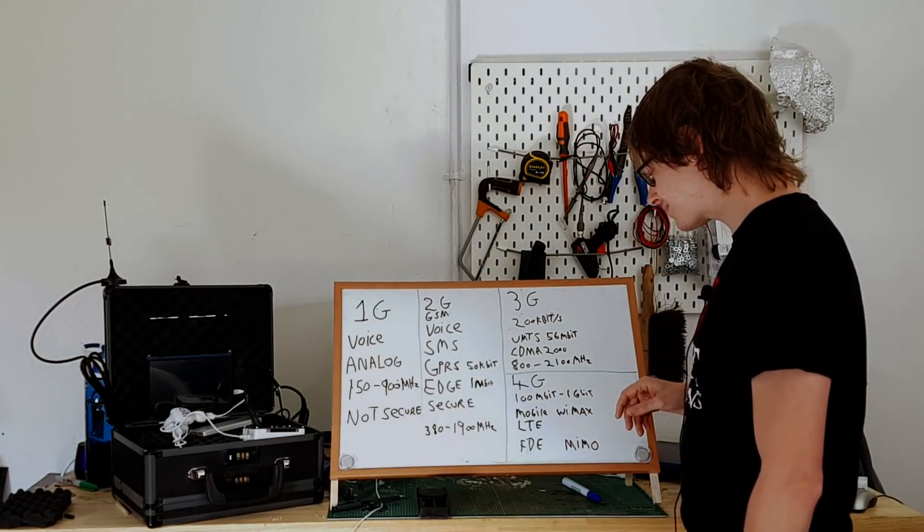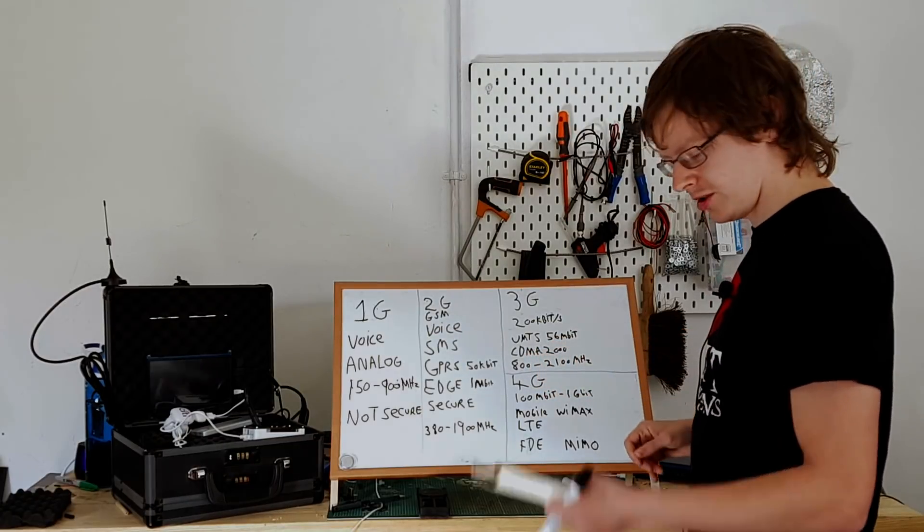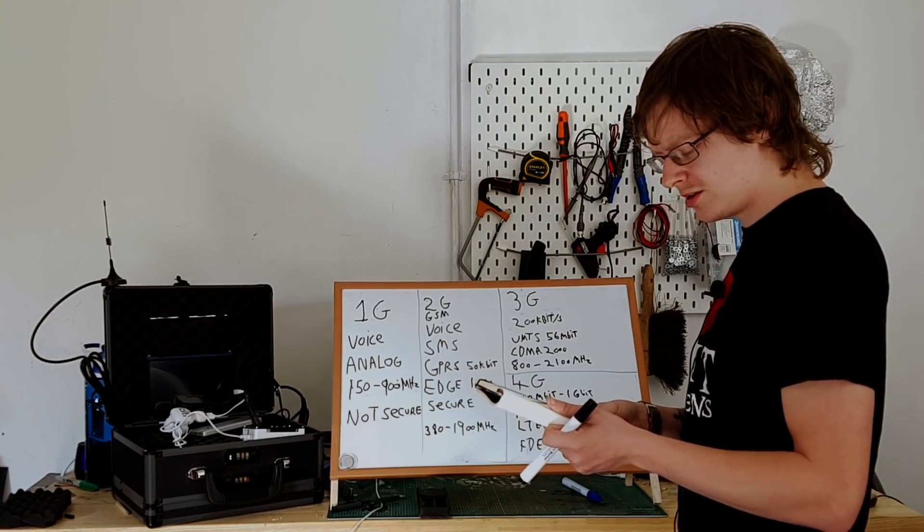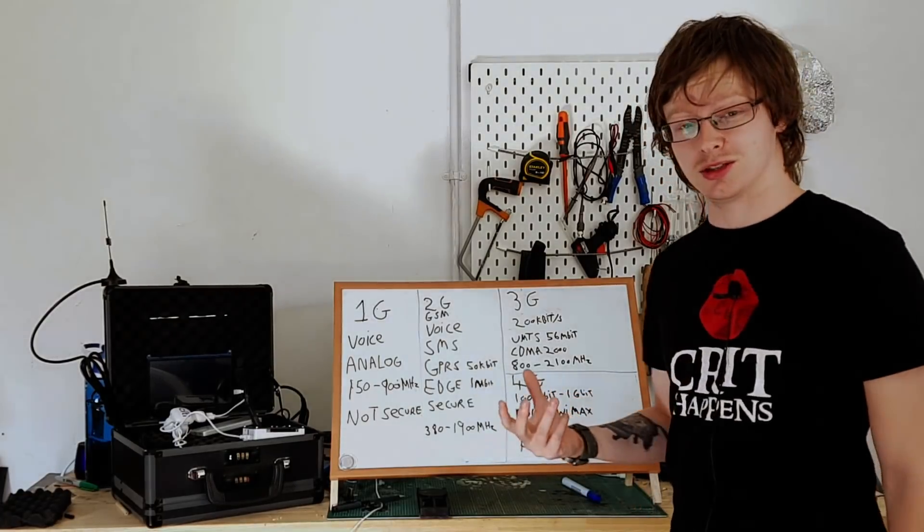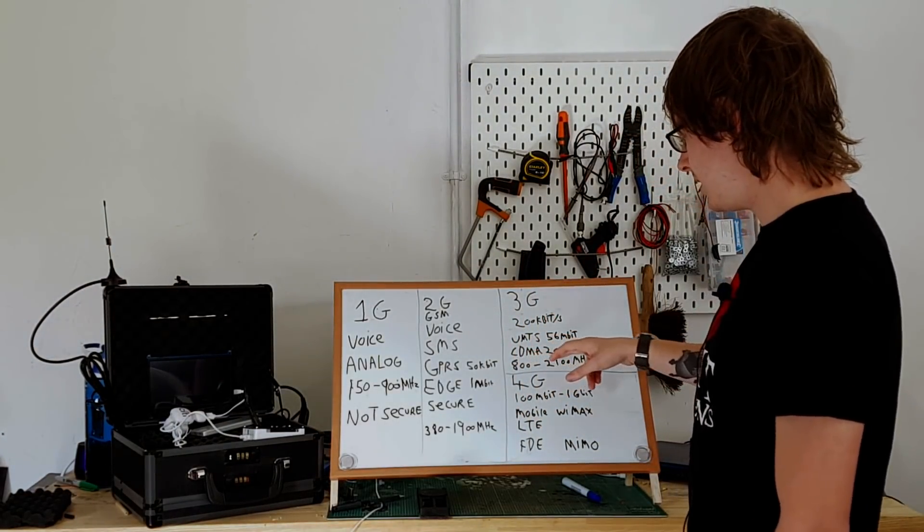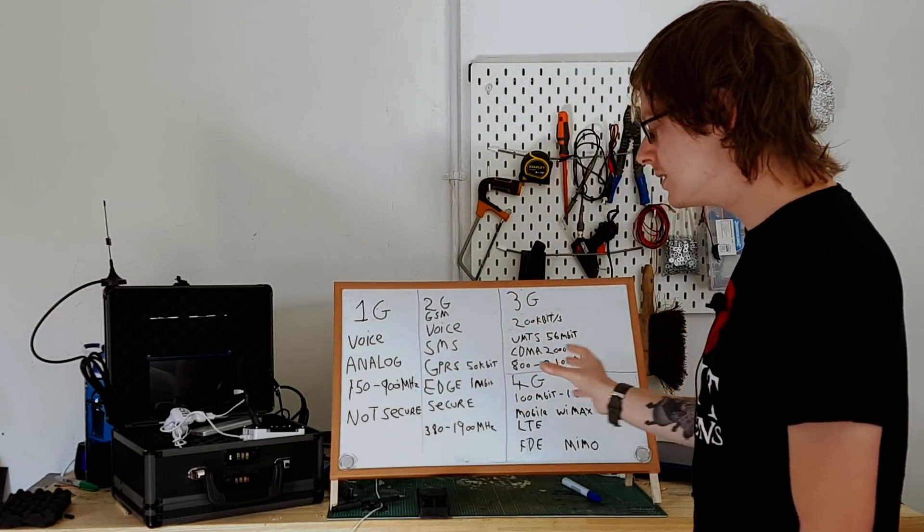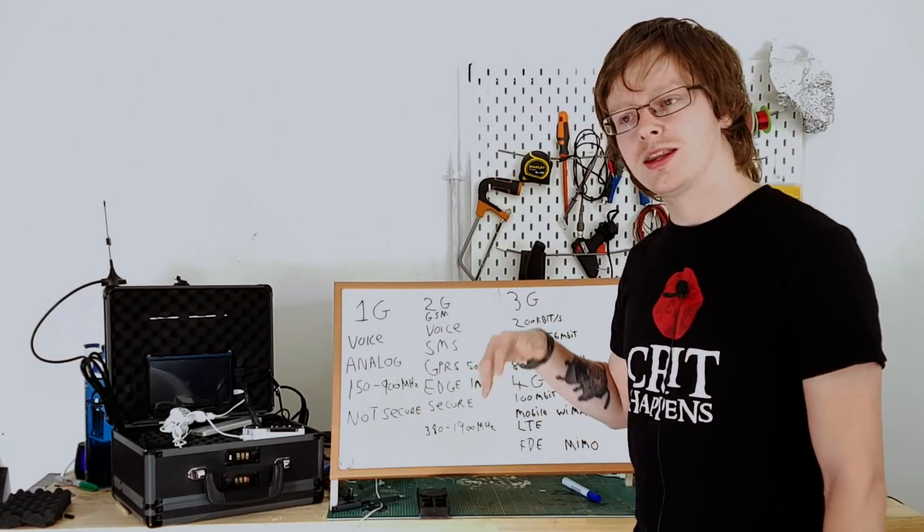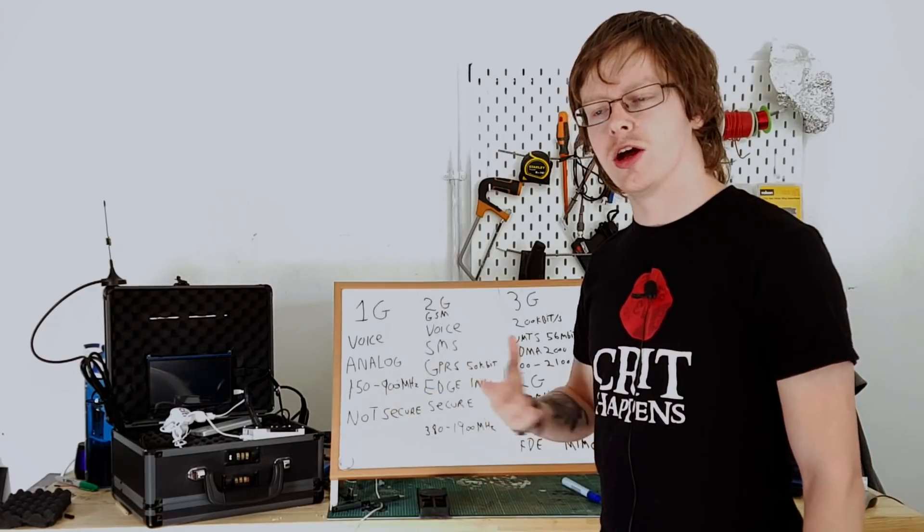And the other standards was CDMA 2000, which was mainly used in South America. It is code division multiple access 2000, and it was just another standard of communications. So the CDMA 2000, UMTS, GPRS, EDGE, all of these are standards within the generational standard. They are technologies and software that allow the communication of these data packets at the set speeds.